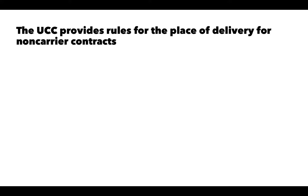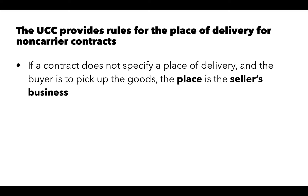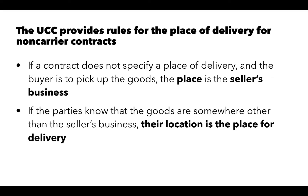The UCC provides rules for the place of delivery for non-carrier contracts. If the contract doesn't specify a place of delivery and the buyer is going to pick up the goods, then the place of delivery is the seller's business. If the parties both know that the goods are somewhere other than the seller's business — such as a warehouse — then that location is the place for delivery.